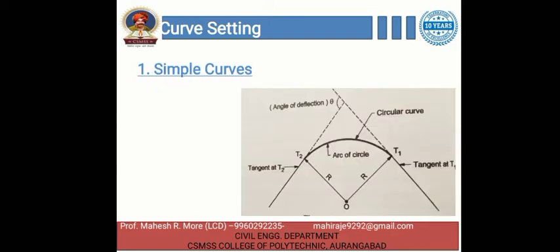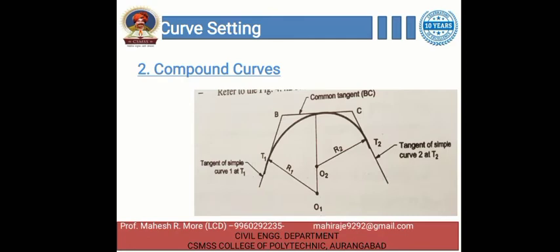Let's see the subtypes of horizontal curves. The first one is the simple curve. A curve which consists of a single arc of a circle connecting two straight tangents and brings about a deflection of the road through an angle theta is called a simple curve. For better understanding, we can see the figure. A simple curve is normally represented by the length of its radius or by the degree of curve. This type of curve is provided at every change in alignment of the road or railway track in plain and hilly areas.